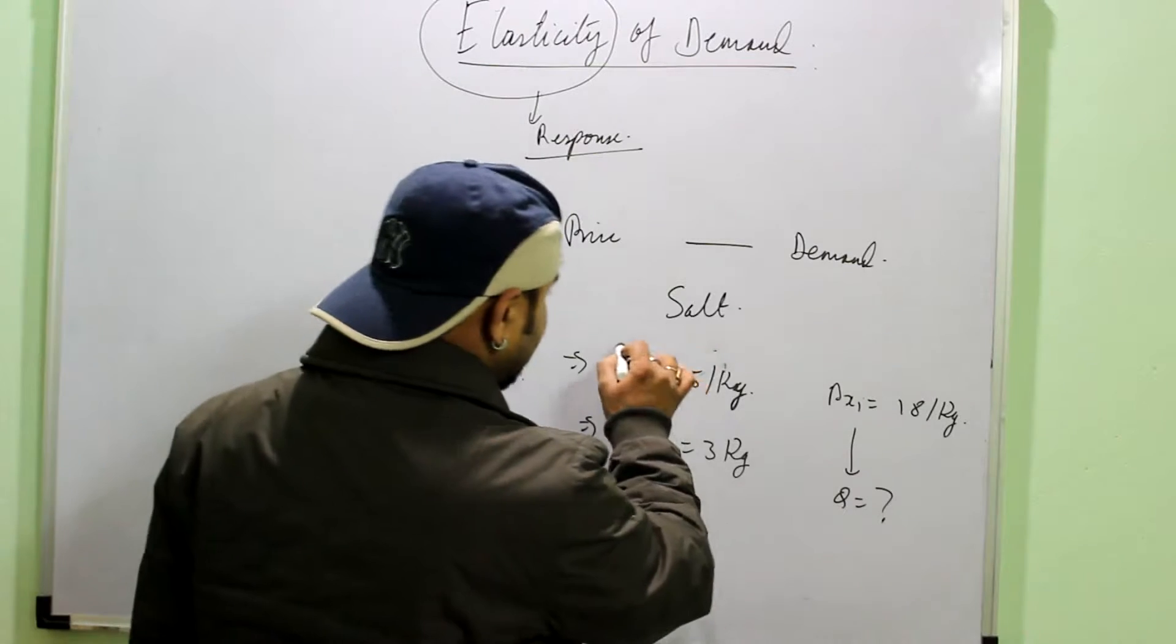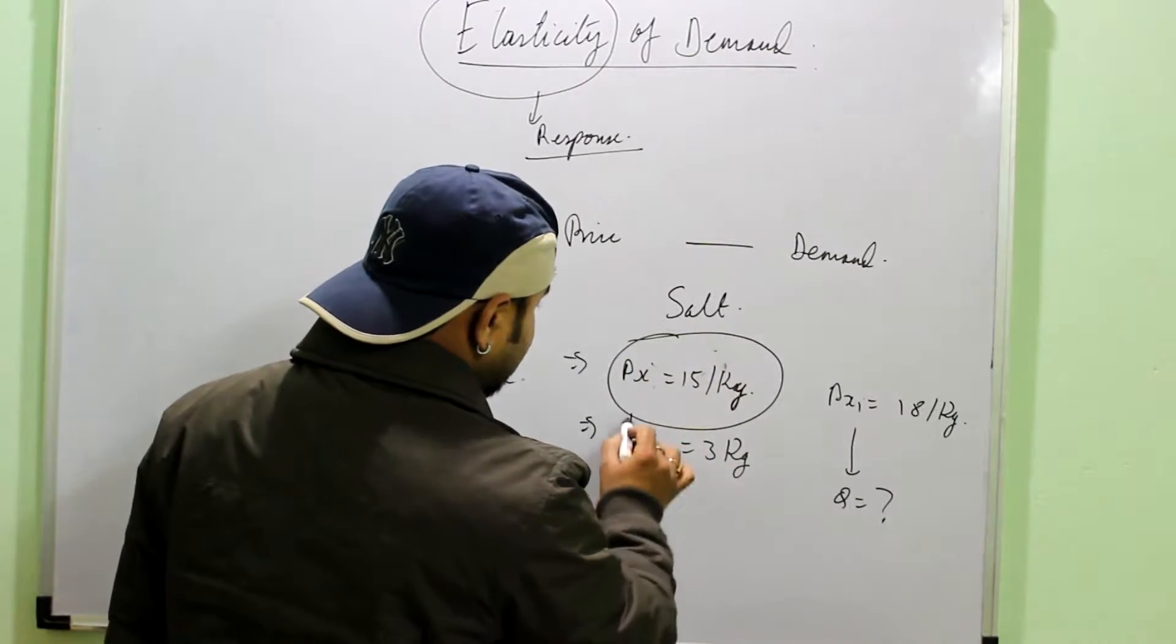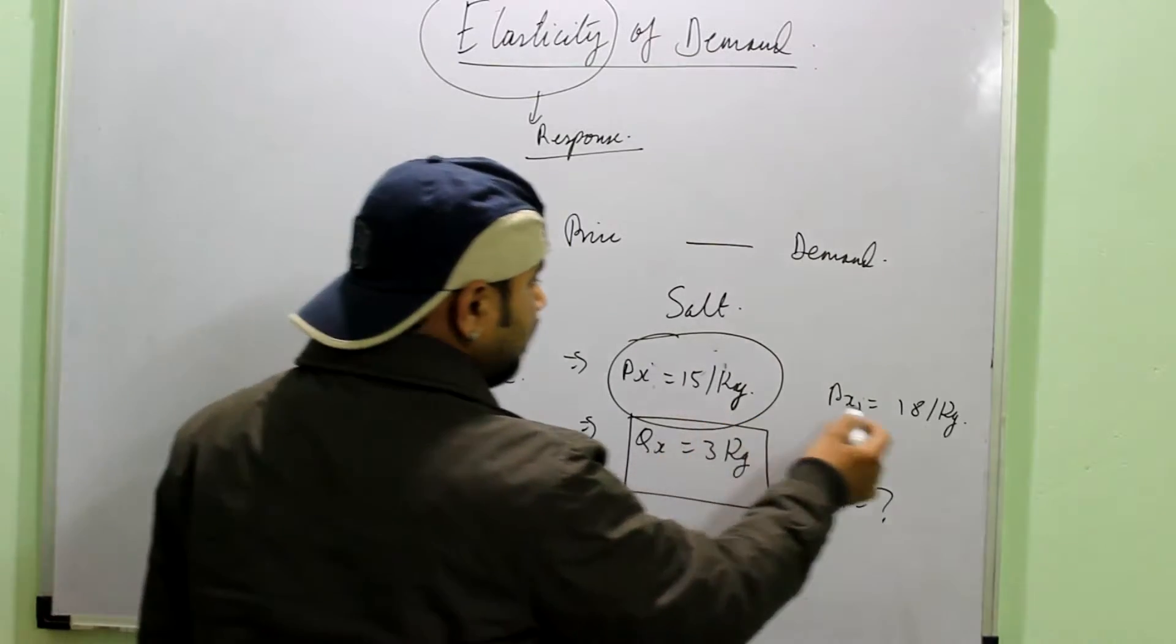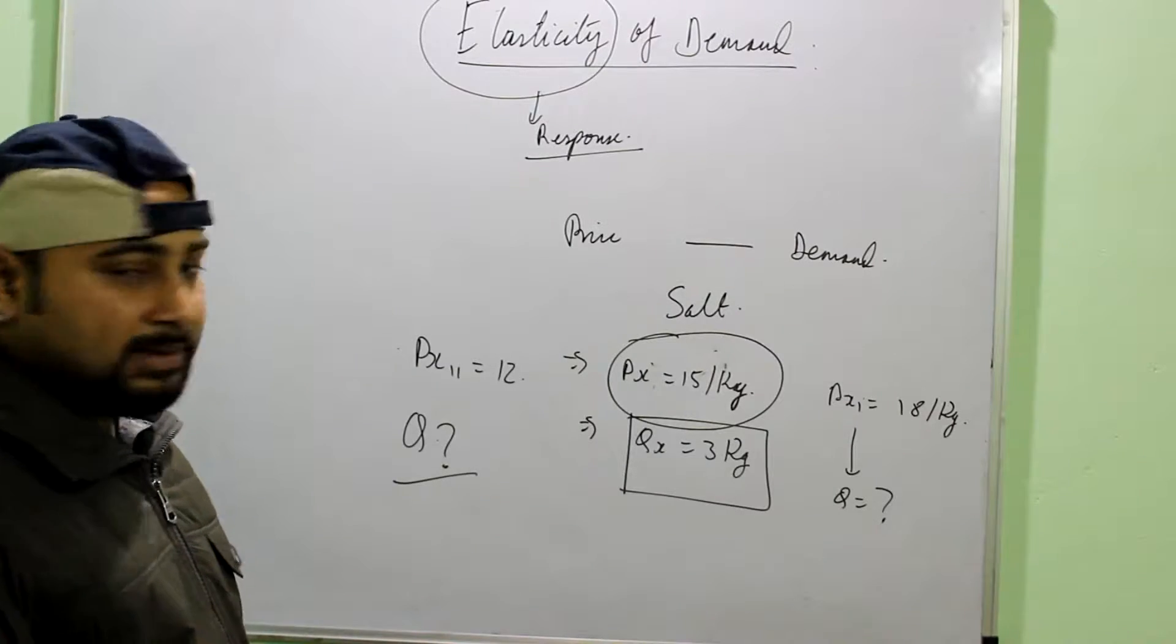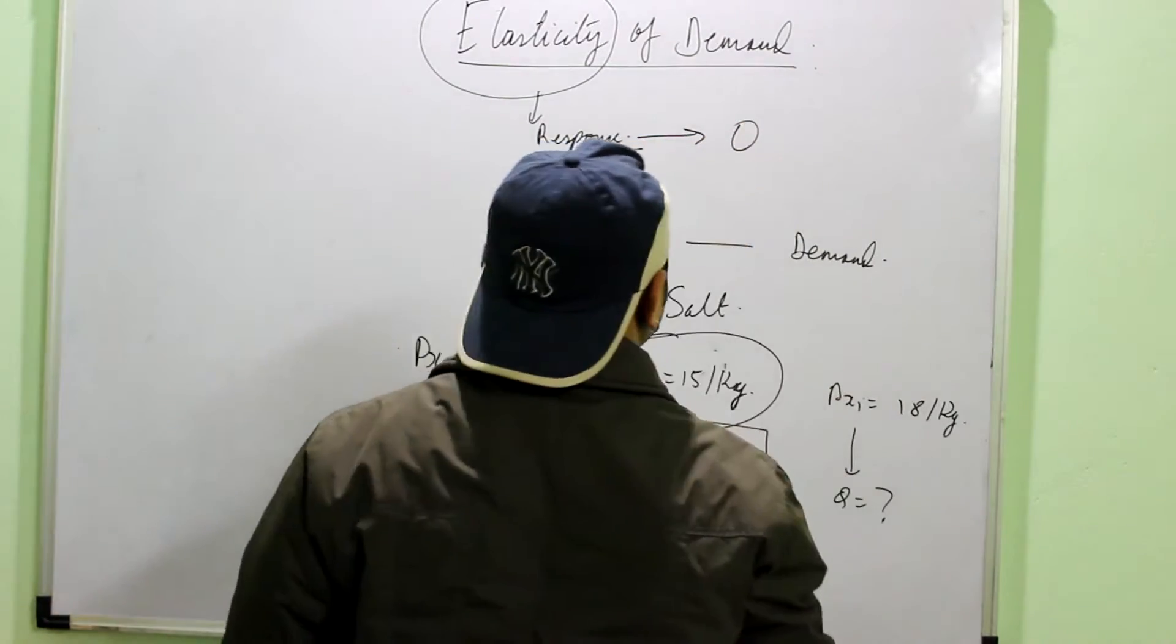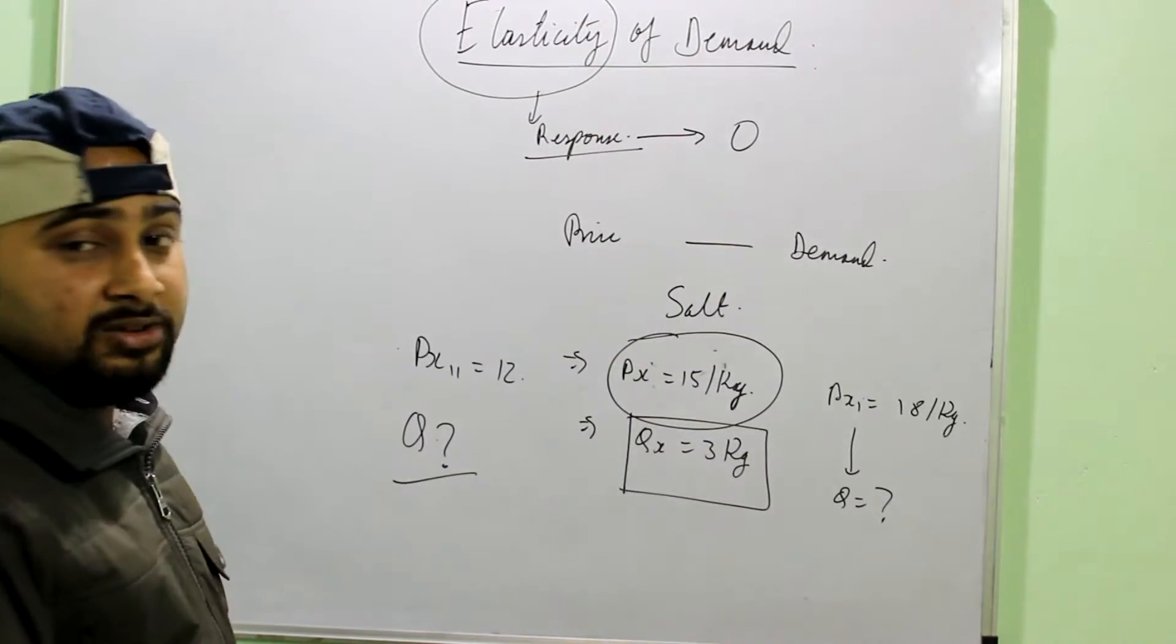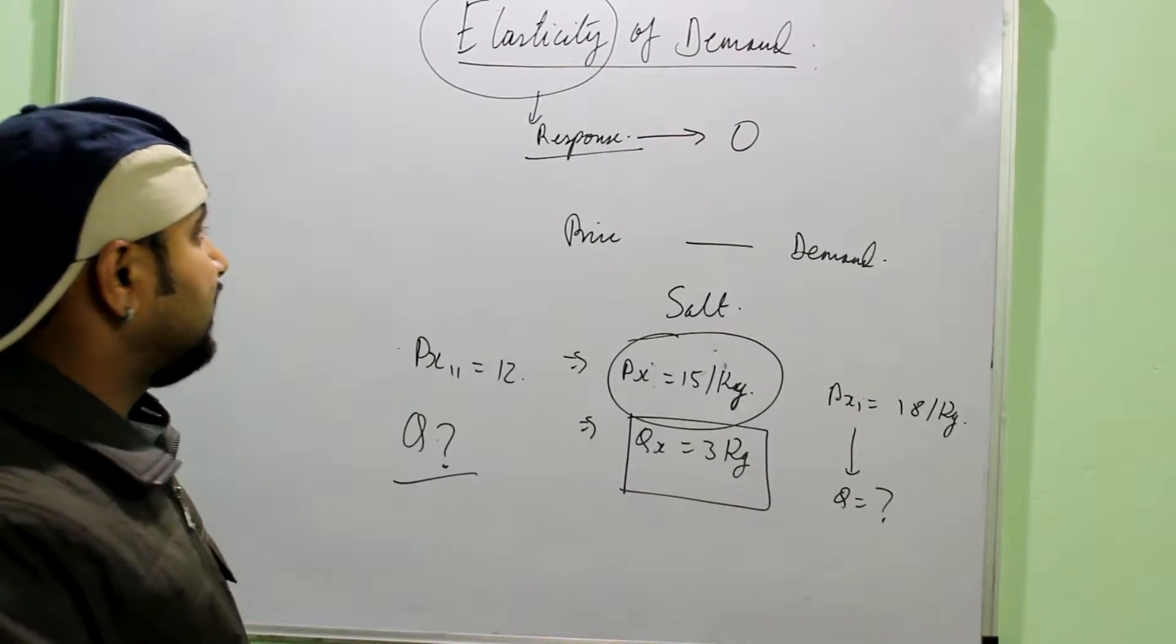So, we can see here, it is not responding. Whether the price is 15 or 18 or 12, the demand remains the same. Demand does not increase. So, it means that response is 0. Or you can say that the elasticity of demand is 0 in case of salt. The price may change, but the demand is not changing.